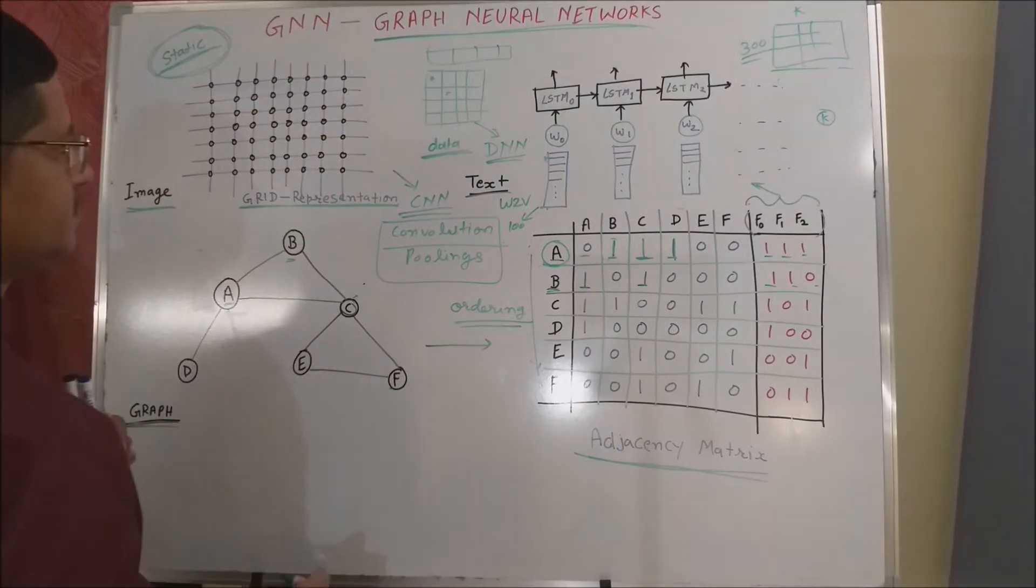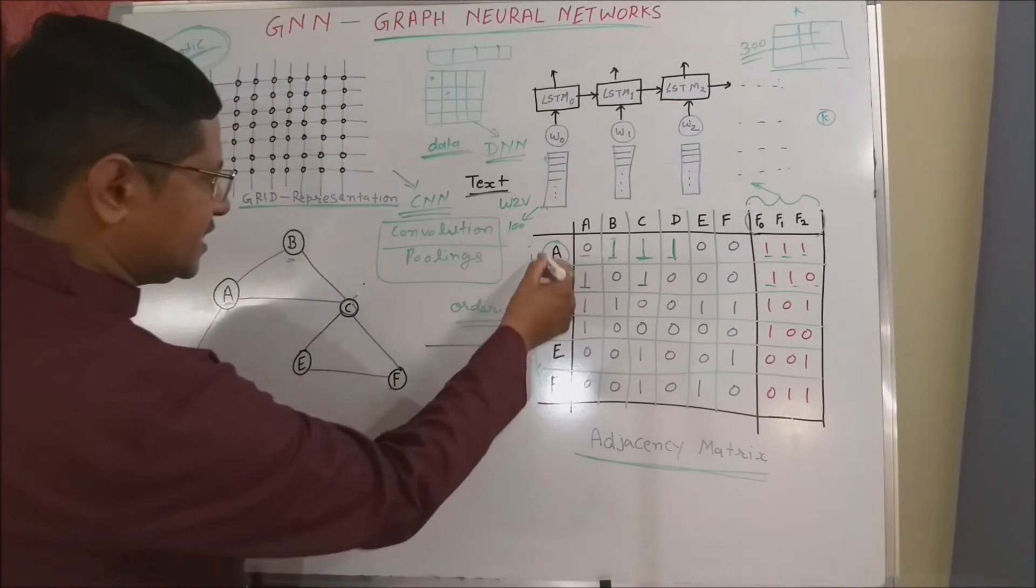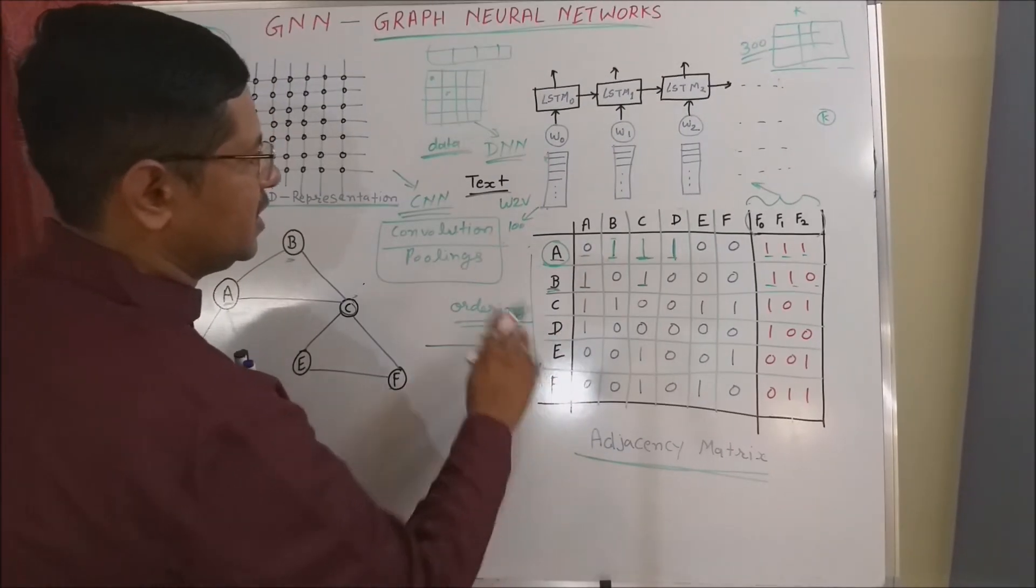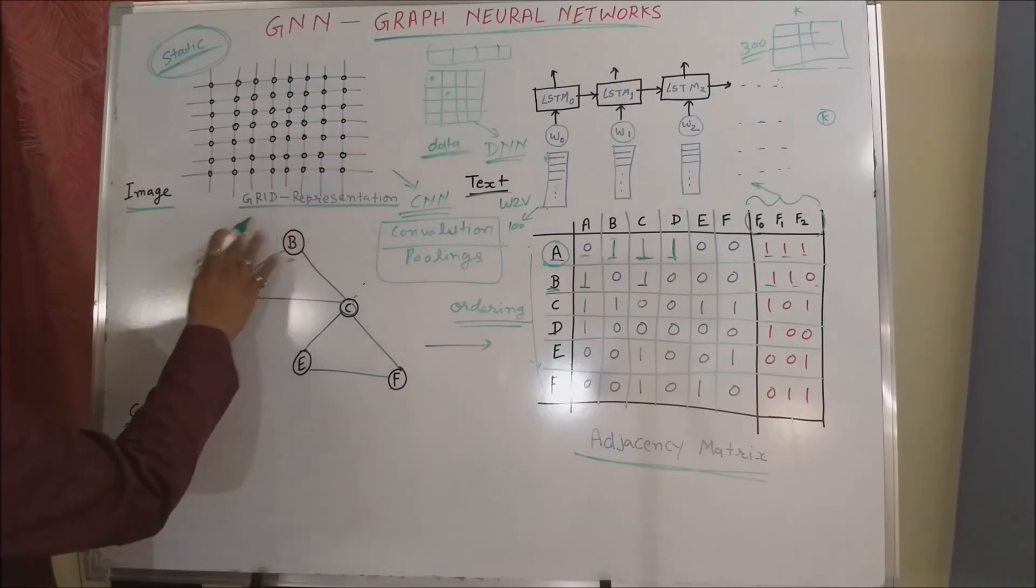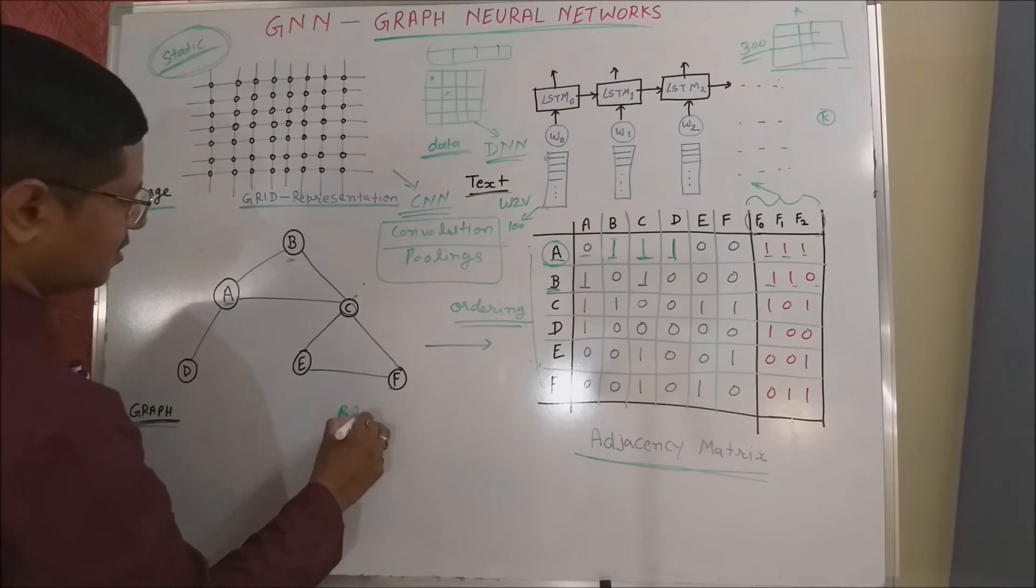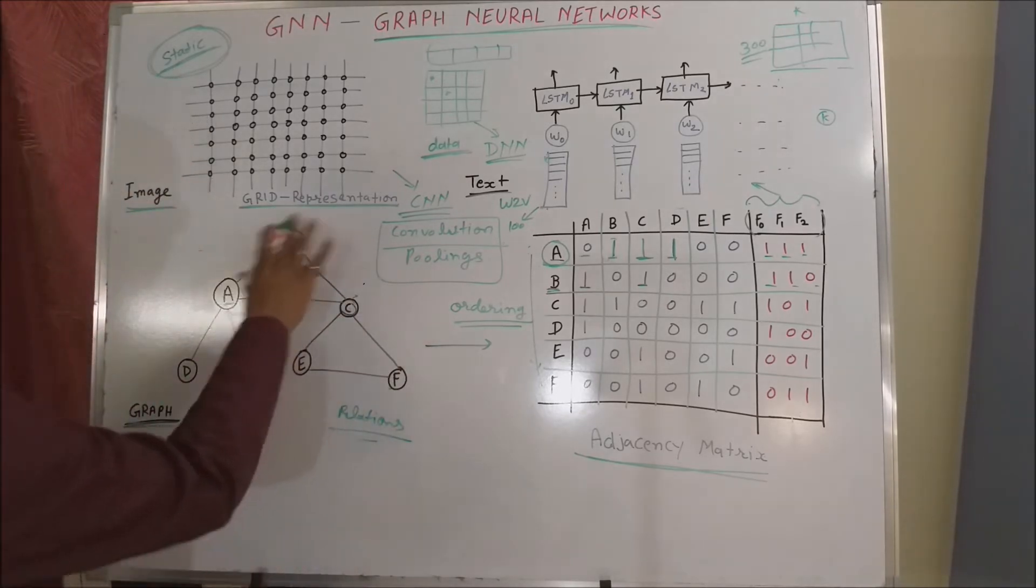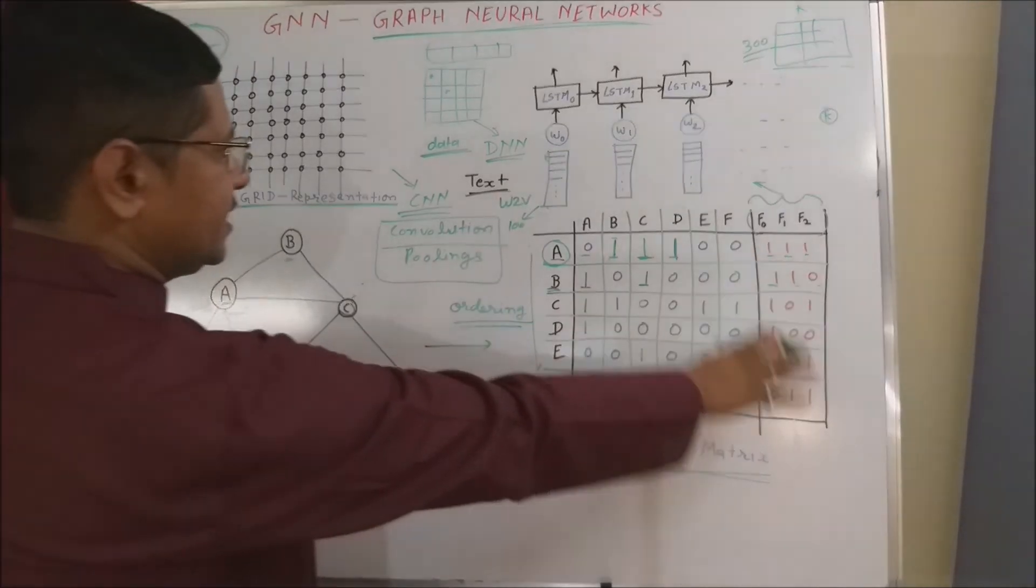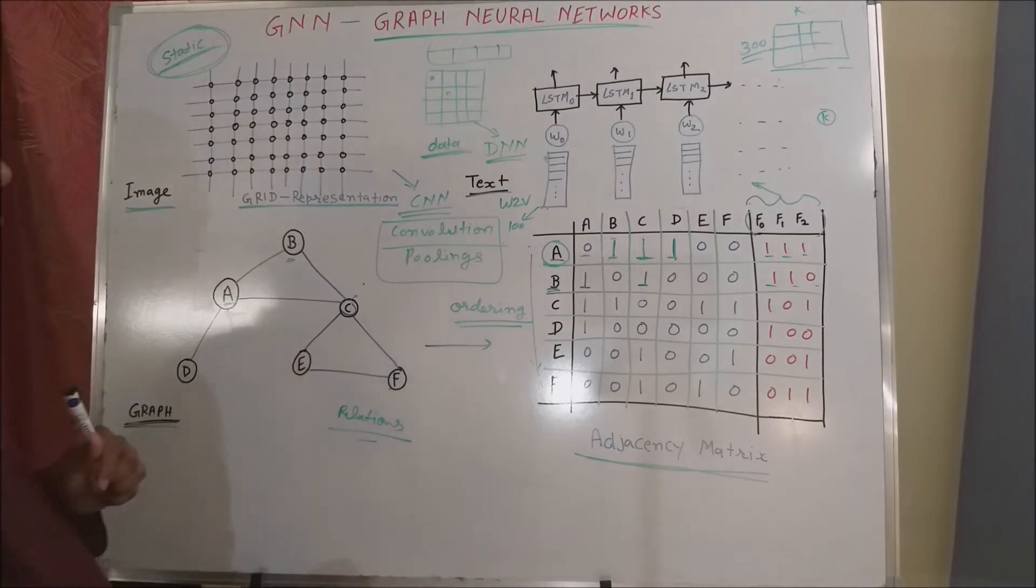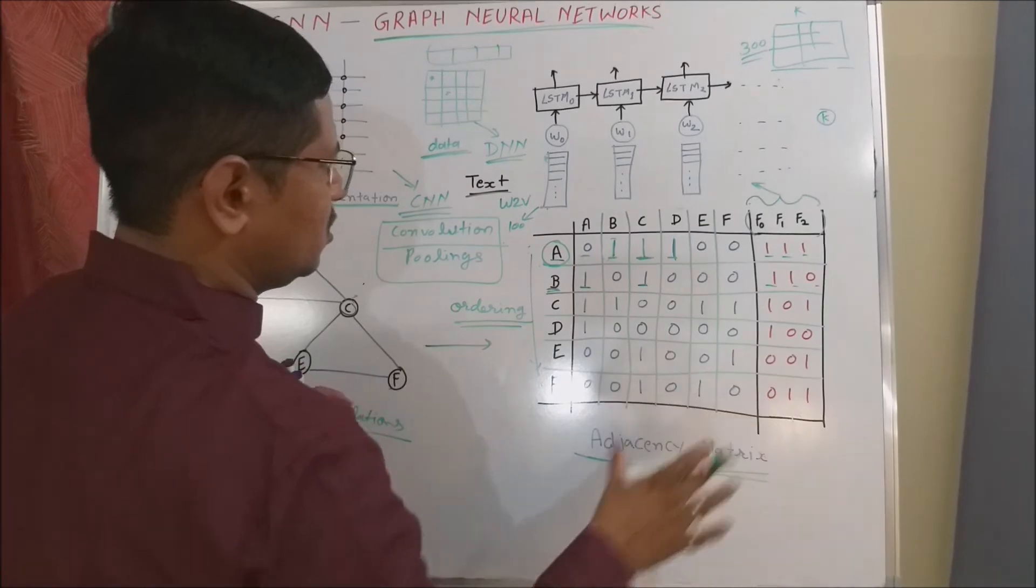So if we change the way to capture the nodes, the entire arrangements and even the entire relationship between those nodes in the matrix will change and it will give entirely different result. And even it is very tough to manage those orders.